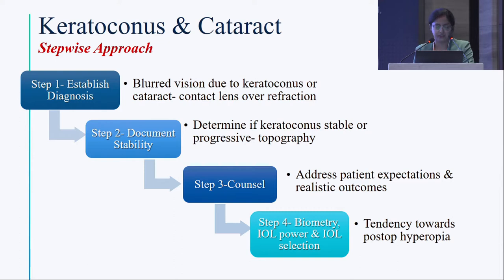Document stability — determine if the keratoconus is stable or progressive, so you need serial topography examinations. Third step is to counsel. The patient should have realistic expectations. Cataract surgery will reduce the magnitude of the refractive error, not eliminate it completely. The outcomes seen in their relatives may not apply to them.